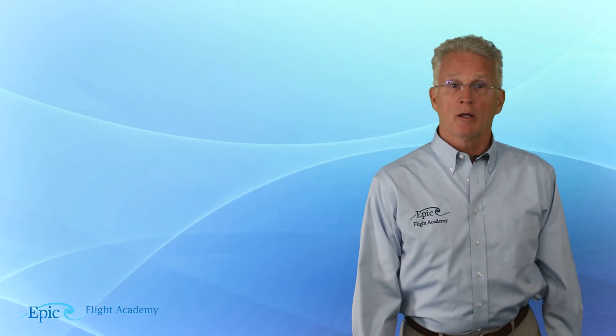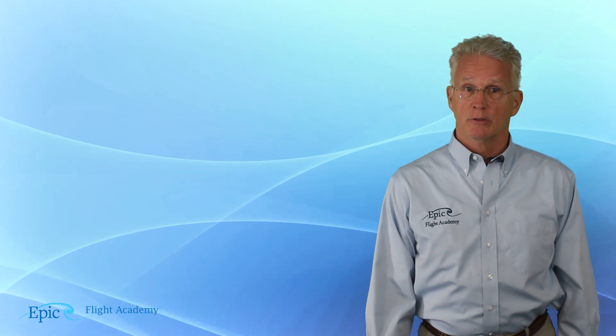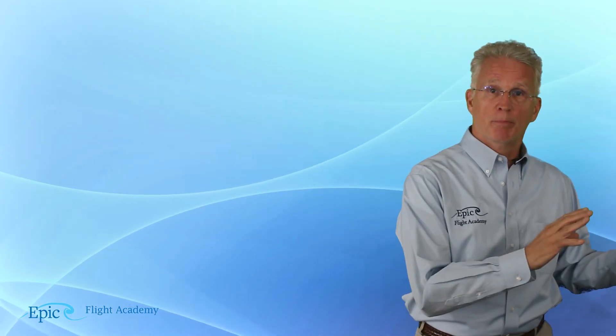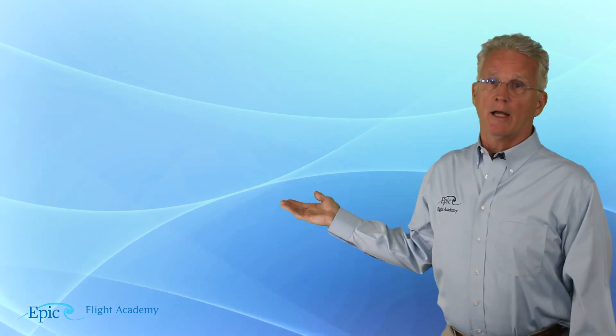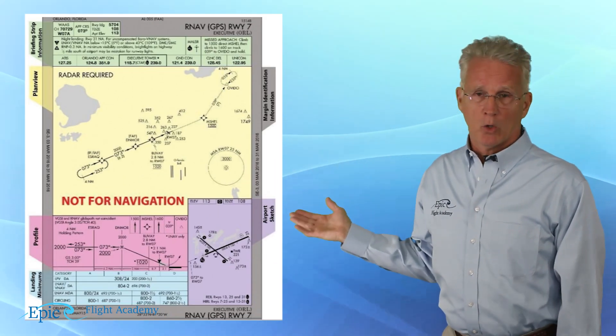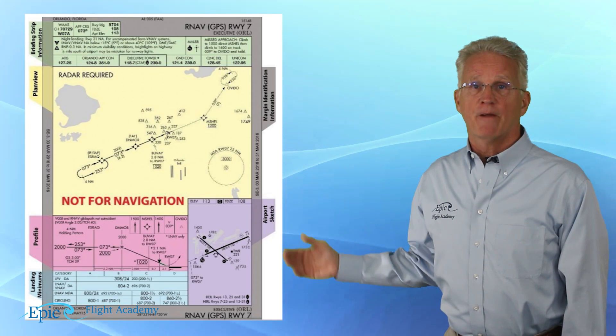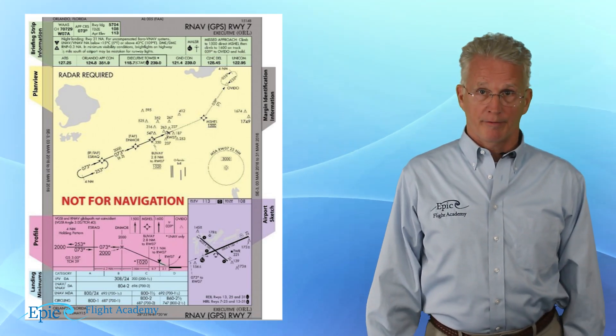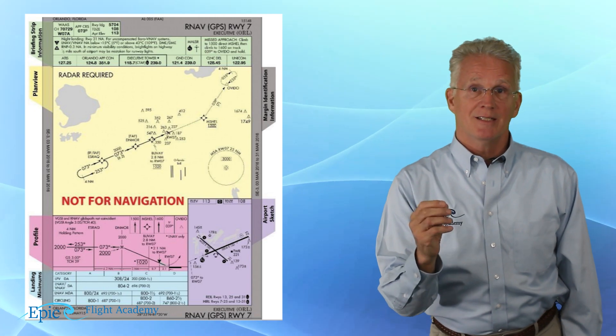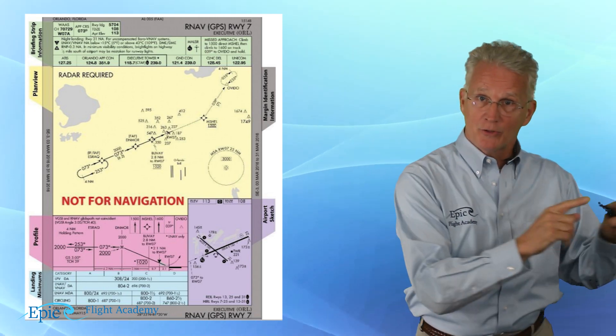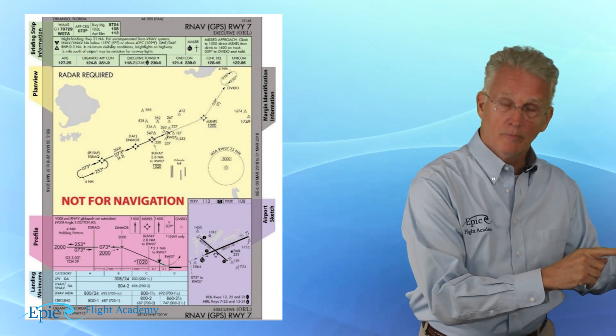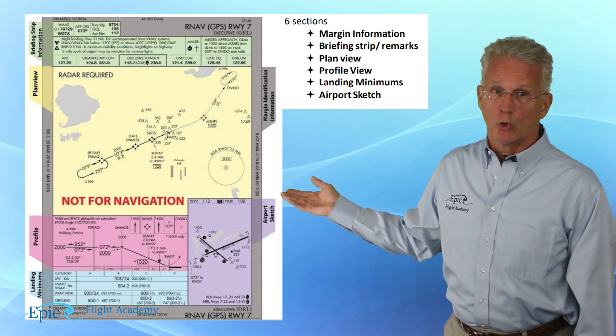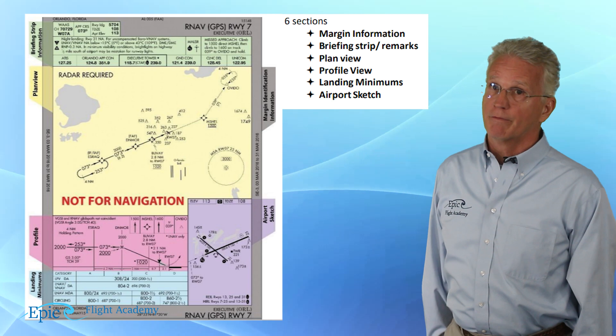Now that we've talked about the five segments of an approach, let's take a moment and talk about the sections of an FAA approach plate. If you take a look at our diagram here, we have color-coded an FAA approach plate. And I want you to be aware of, and then discuss in detail with your flight instructor, these six parts of an approach plate.